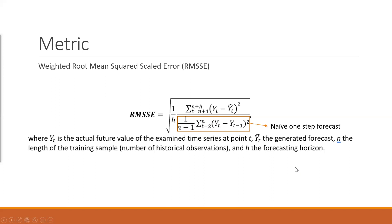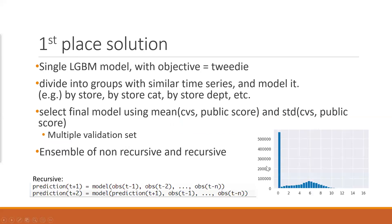H is the forecasting horizon. I think this is a very interesting metric that I have never used before. But I think it can tell you how much improvement with respect to the one step forecast baseline.